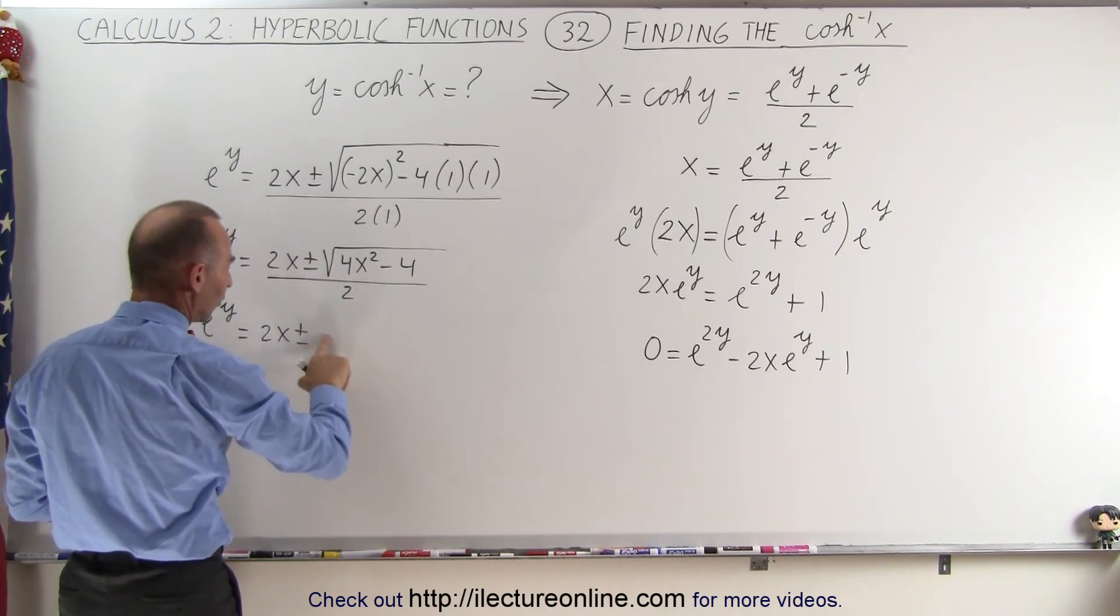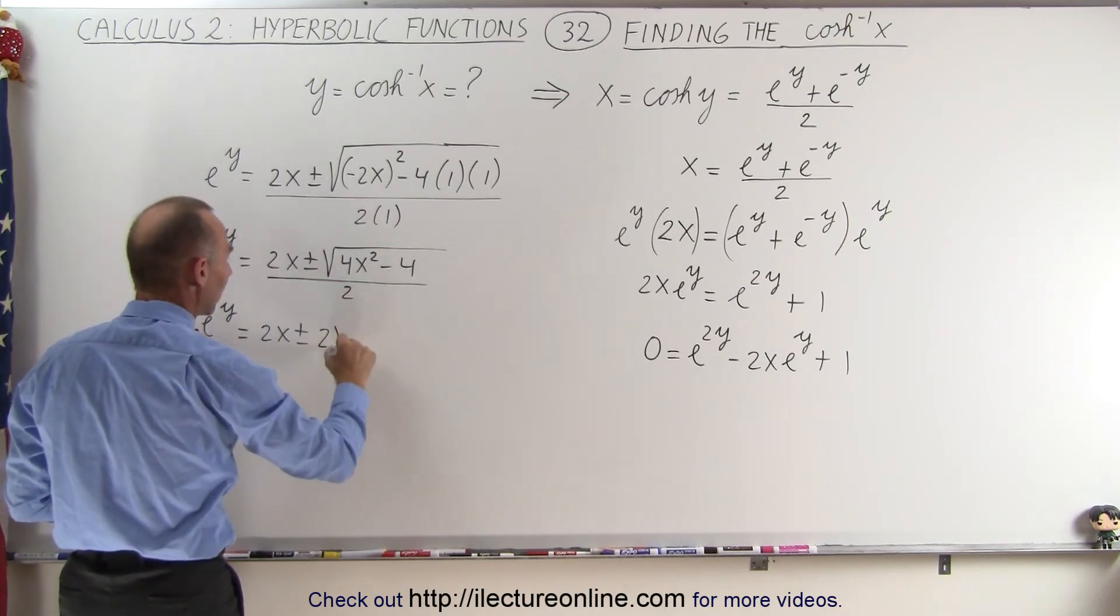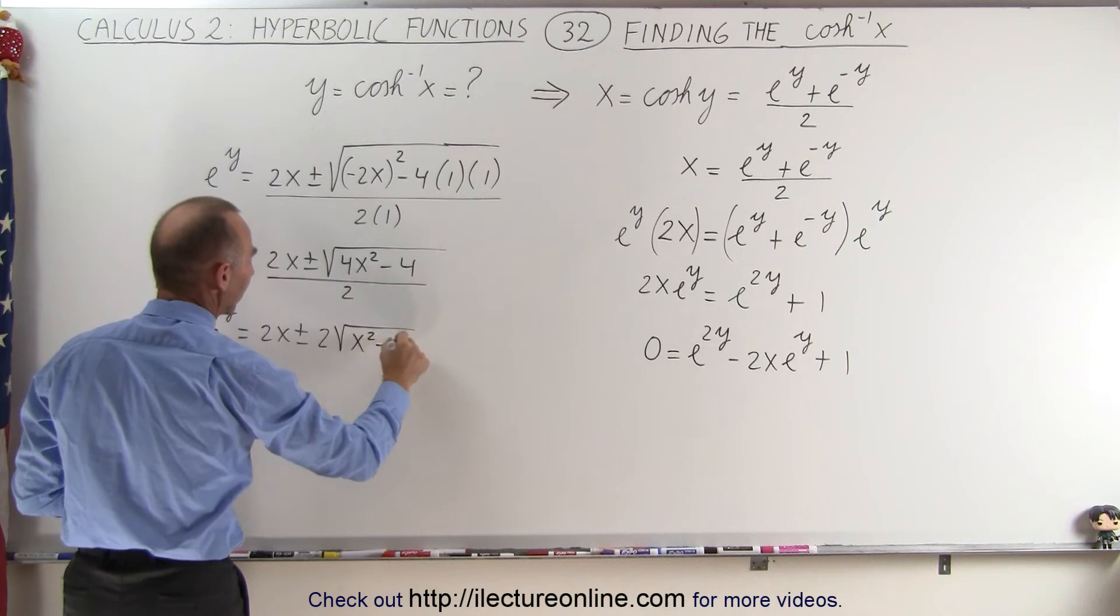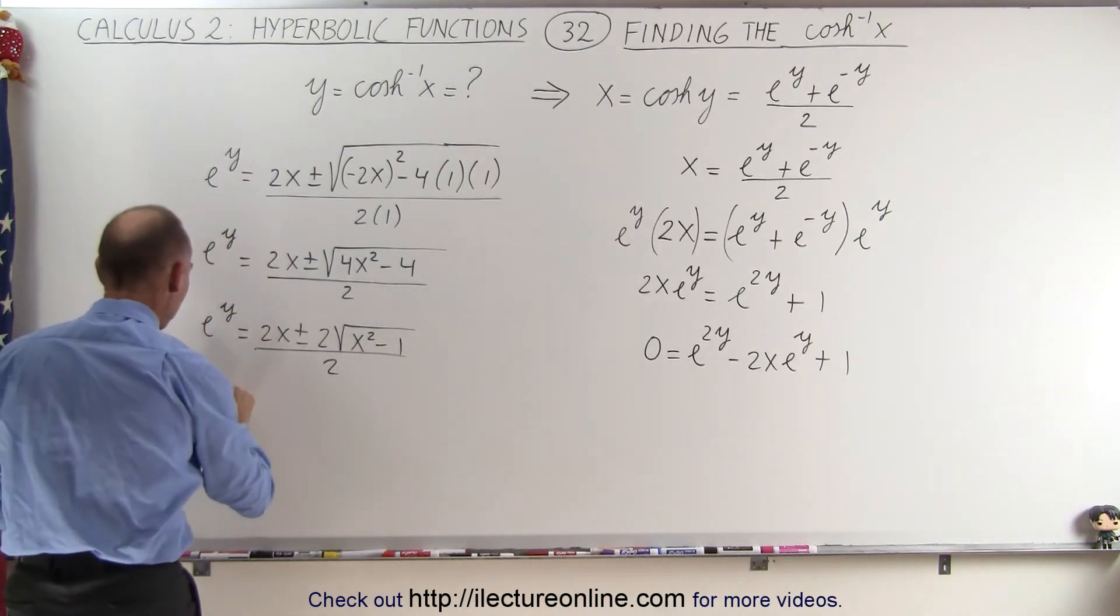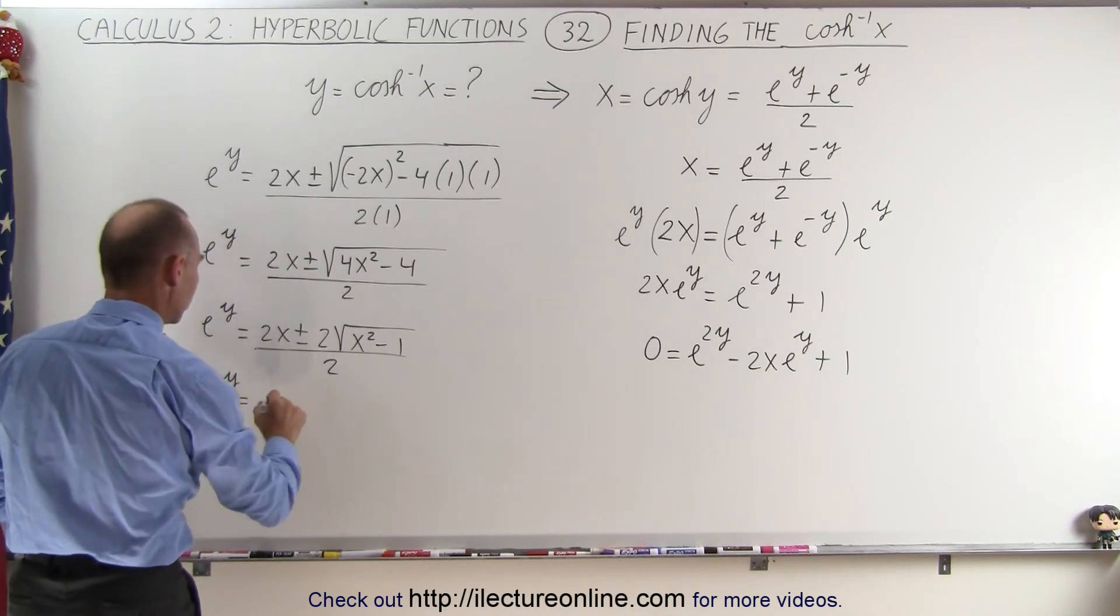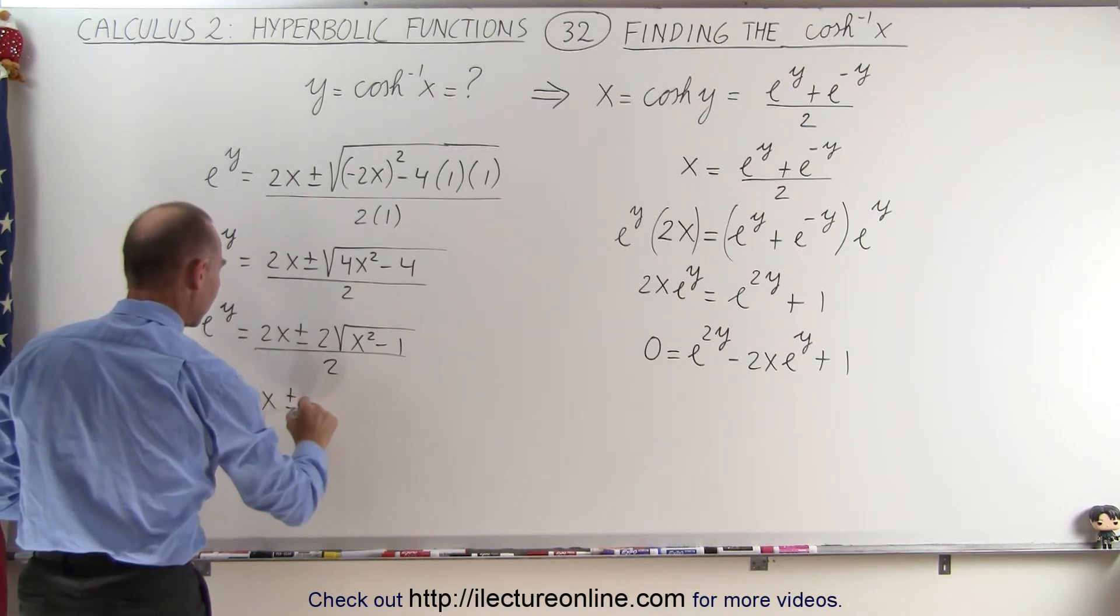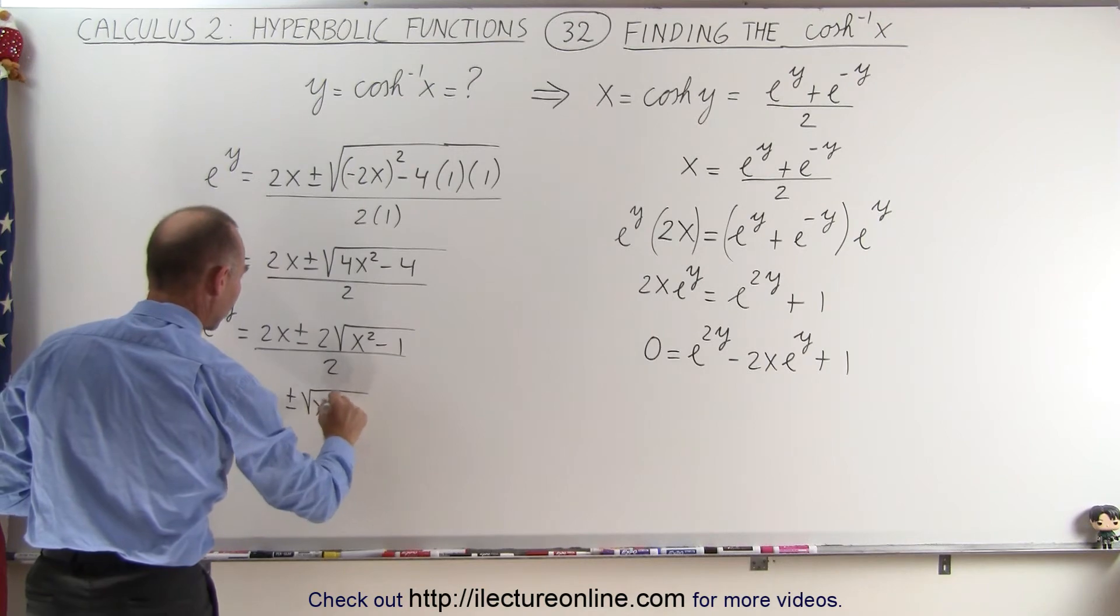when we factor out of 4, out of the square root, we get 2 times the square root of x squared minus 1 divided by 2. And now we can divide the 2 into the numerator, and we get e to the y is equal to x plus and minus the square root of x squared minus 1.